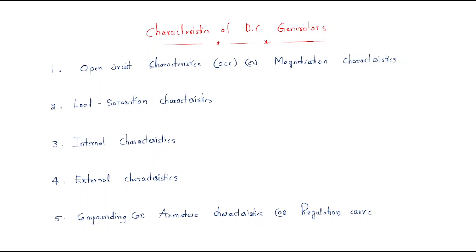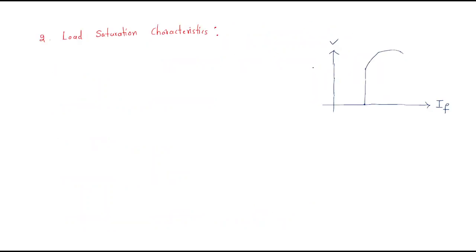Next we will move into the characteristics of DC generators. Up to now we discussed DC motors; now we are entering into DC generators. The first characteristic to discuss is the open circuit characteristics, or OCC, also called magnetizing characteristics.